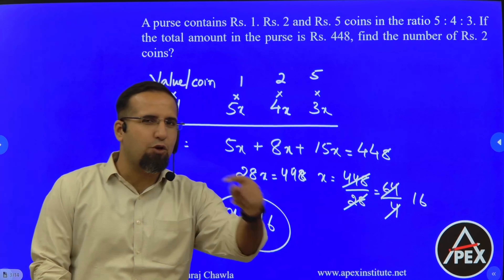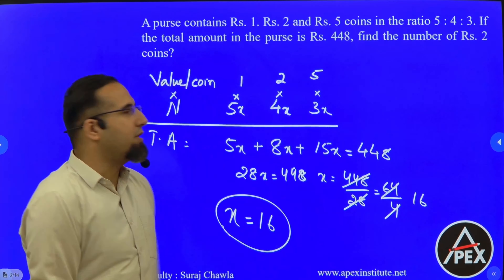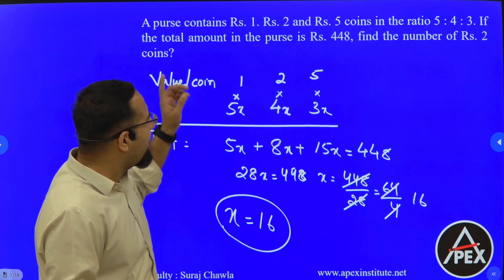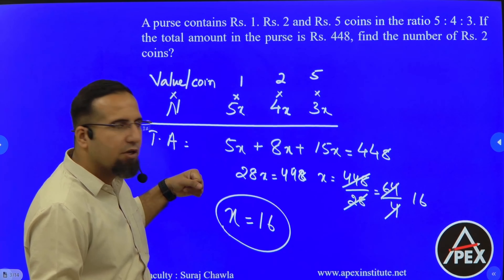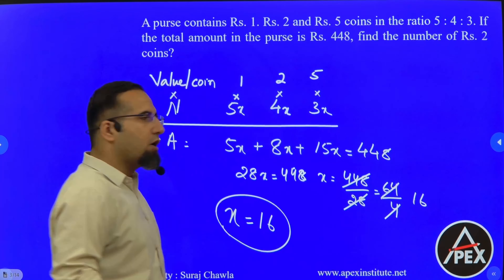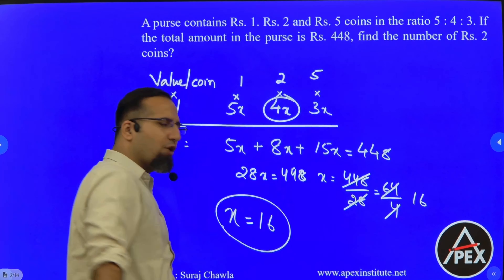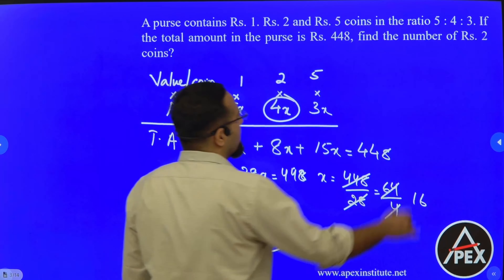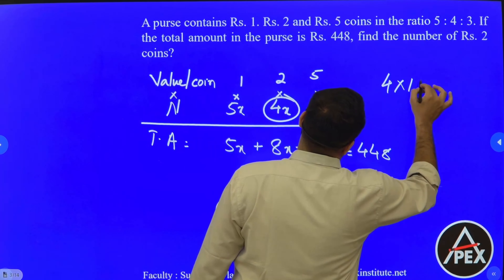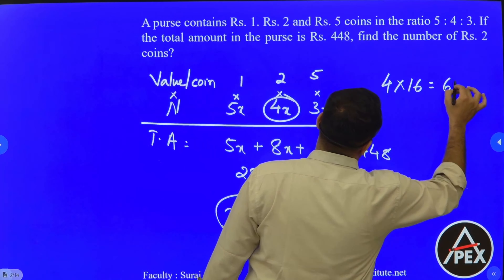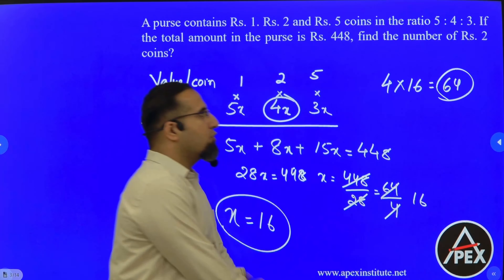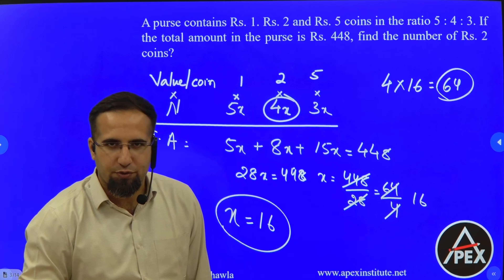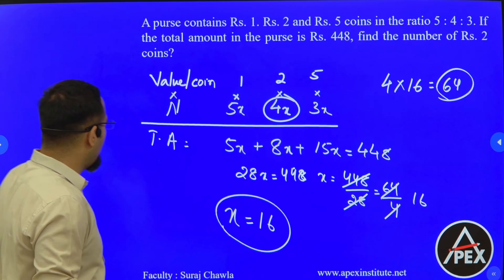Now that we have x = 16, the question asks: find the number of 2 rupee coins. The number of 2 rupee coins is 4x = 4 × 16 = 64. So therefore there are 64 two-rupee coins as per the question. Let's apply this in one more question.